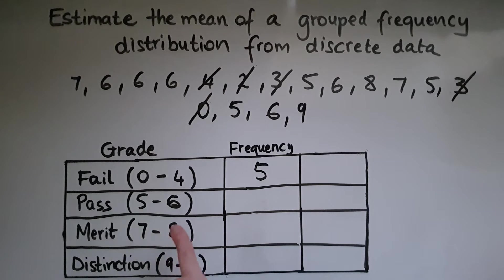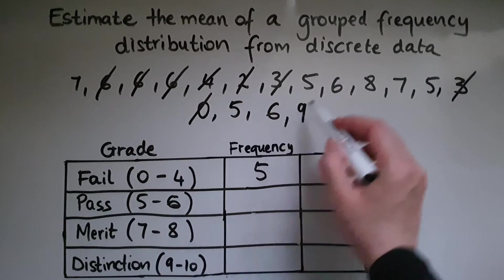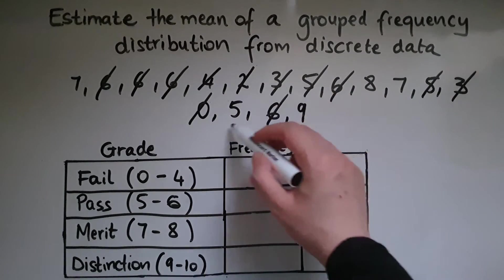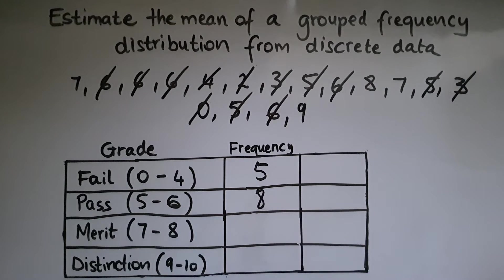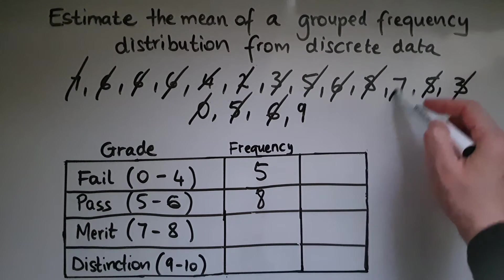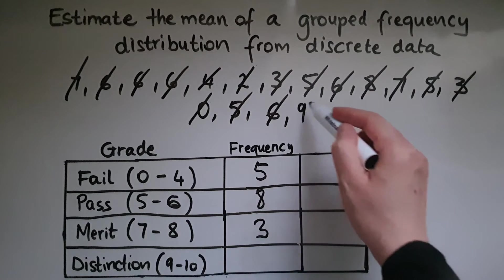And between 5 and 6, so we've got 1, 2, 3, 4, 5, 6, 7, 8. Merit, we've got 1, 2, 3. And distinction, we've got only 1.